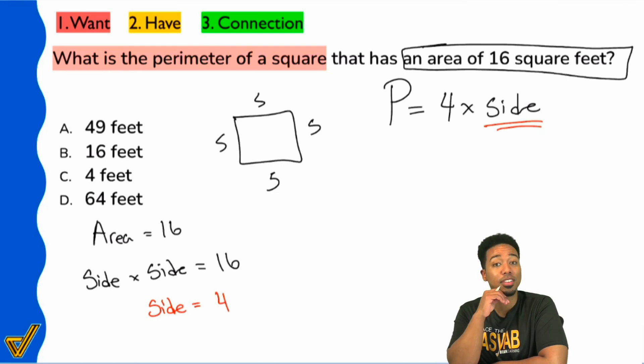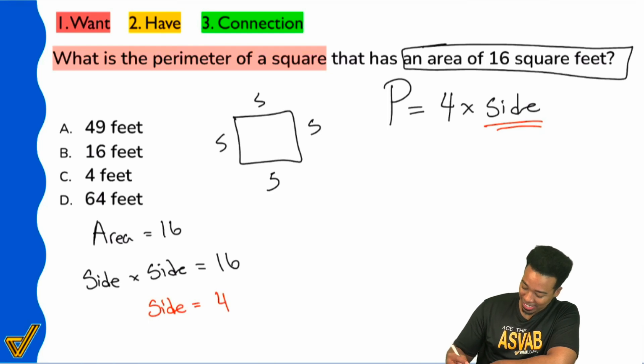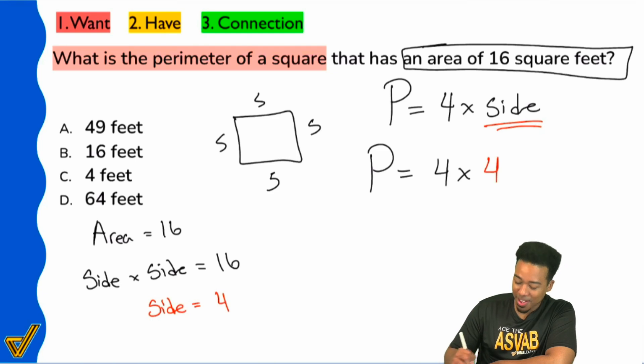And once we plug that in, coincidentally, we'll see that we have the perimeter equals 4 times 4. Everybody, what's 4 times 4 going to be? What's 4 times 4 going to be? Yeah, that's going to be 16. That's going to be 16. And so, the perimeter of this square is going to be 16 feet.